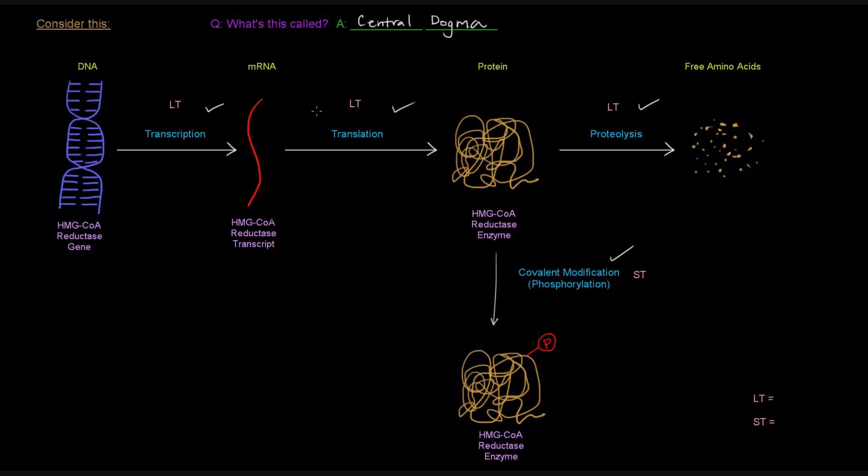So you notice these LTs and these STs here. The LTs stand for long-term, and ST stands for short-term. So long-term regulation is going to focus on these three things: transcription of the gene, translation of the mRNA transcript, and proteolysis of the enzyme itself. Whereas covalent modification occurs very short-term, phosphorylation and dephosphorylation can happen in an instant. So that's a short-term way of controlling the activity of this enzyme, whereas these three are all ways of controlling whether or not that protein is even around.